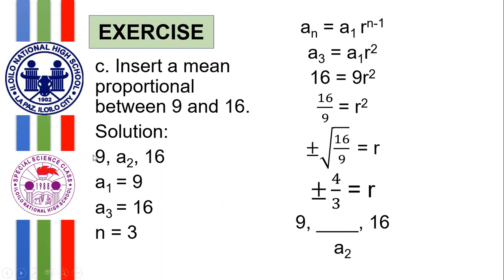Going back to 9, a₂, 16: if r = 4/3, then 9 × (4/3) = 12. If r = −4/3, then 9 × (−4/3) = −12. Therefore, the mean proportional between 9 and 16 has two possible values: positive 12 and negative 12, and both are correct.